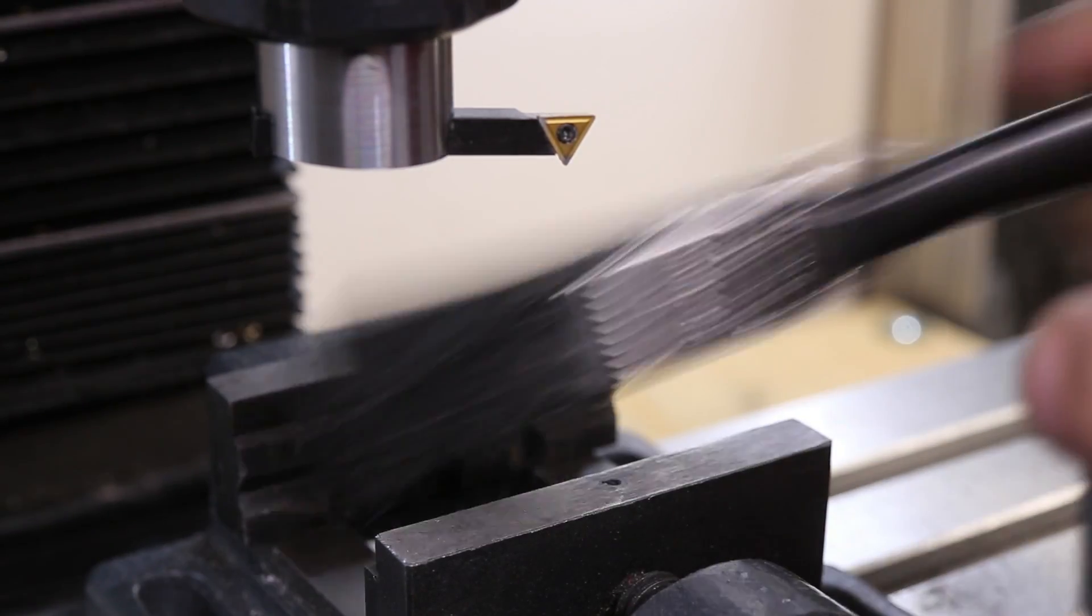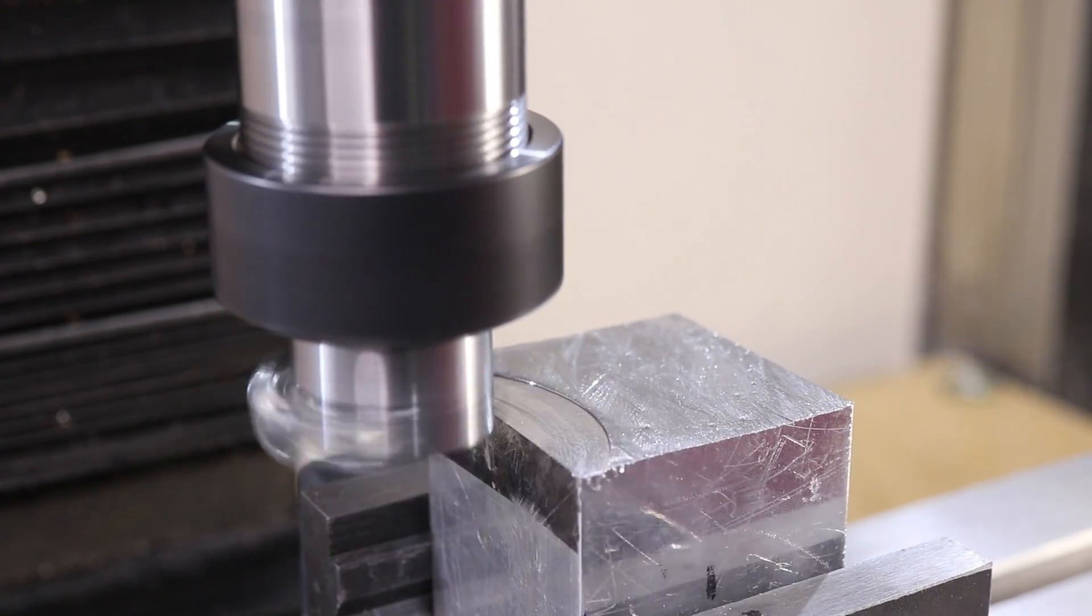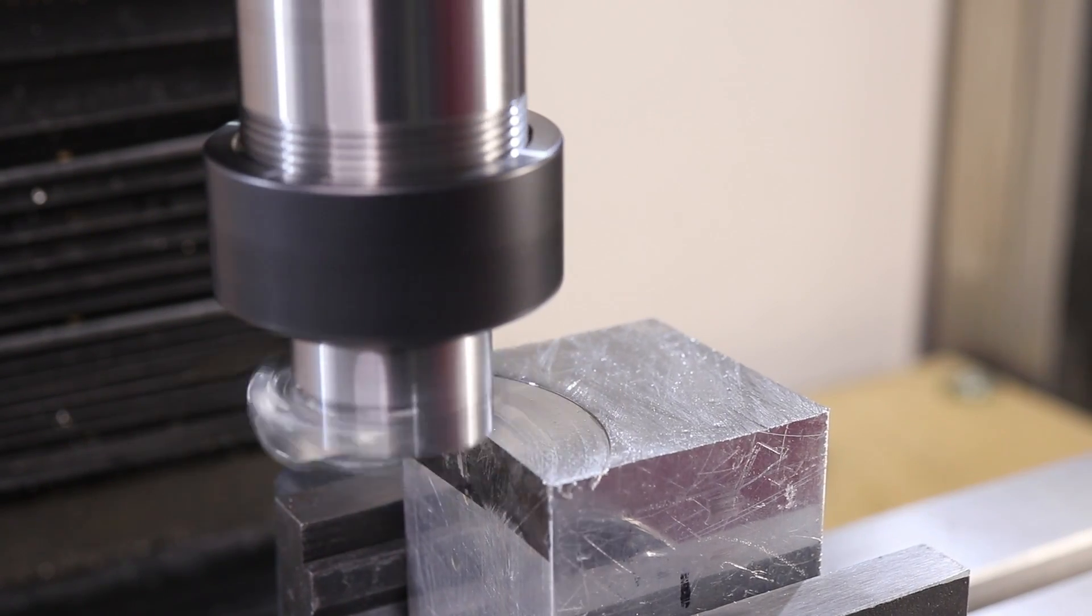I'll now take the aluminum and rough it down to the correct size. I'll use the fly cutter because it does a really good job of removing a bulk of the material pretty quickly.